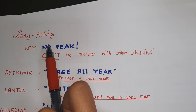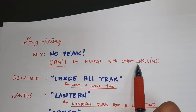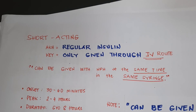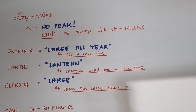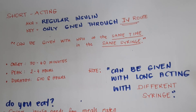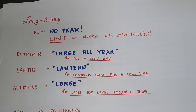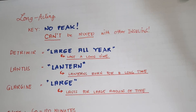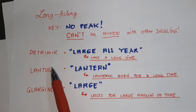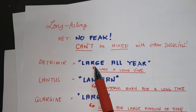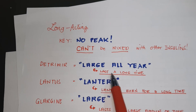For long acting insulin, always remember it has no peak. It cannot be mixed with other insulins. We have three medications: detemir, Lantus, and glargine. Detemir — think 'large all year, lasts a long time.' Lantus sounds like lantern — lanterns burn for a long time.